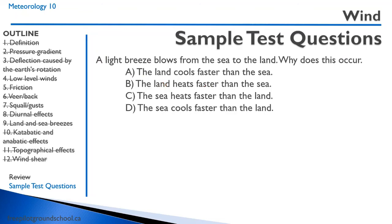A light breeze blows from the sea to the land — why does this occur? This happens during the day and is called a sea breeze. A sea breeze occurs during the day because the land heats up faster than the sea — the water has a high specific heat capacity. Correct answer is B.